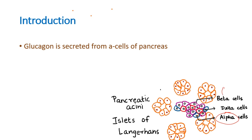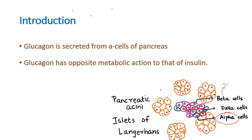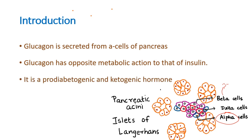Beta cells produce insulin. Glucagon is the exact opposite of insulin — the function of glucagon is exactly opposite to that of insulin. That means glucagon is pro-diabetogenic, which means it increases the glucose level in the blood, and it is ketogenic, which means it increases the ketoacid level in the blood.